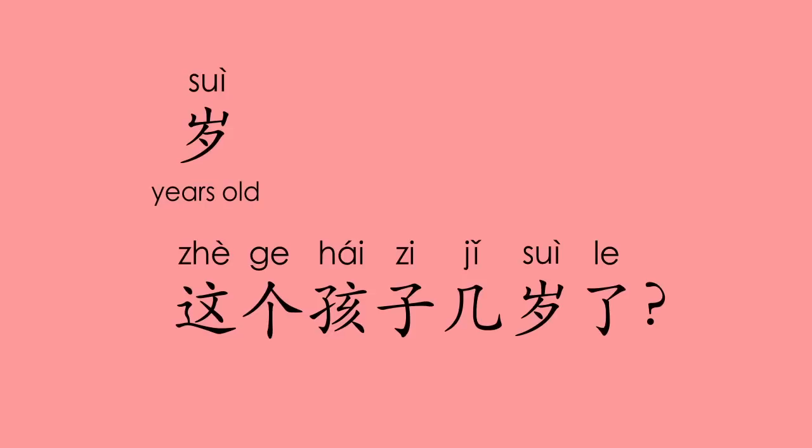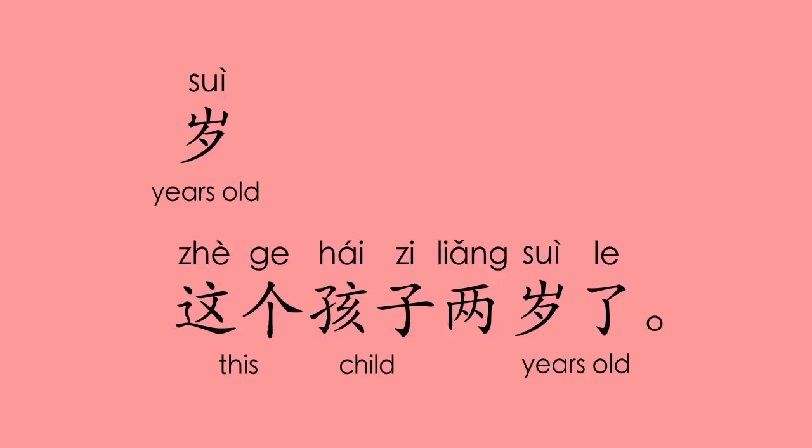岁 — years old. 这个孩子几岁了? (How old is this child?) 这个孩子两岁了。 (This child is two years old.)